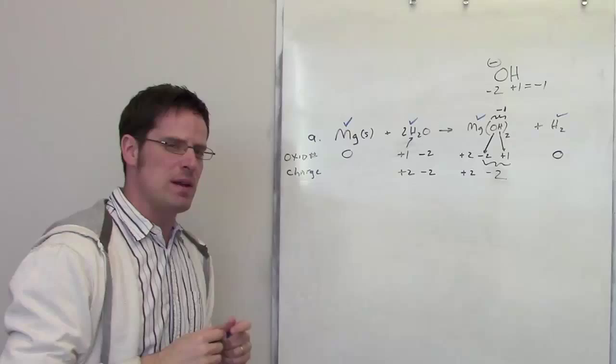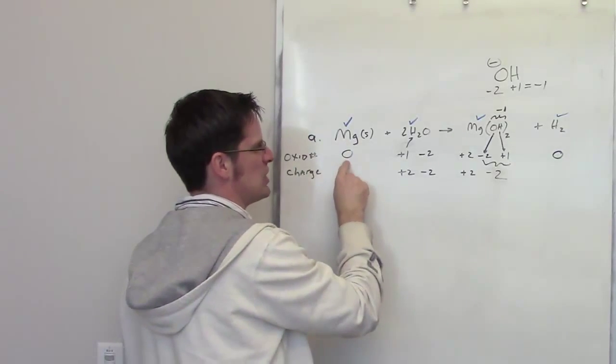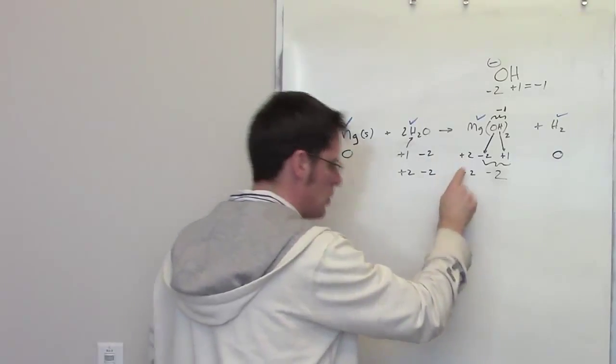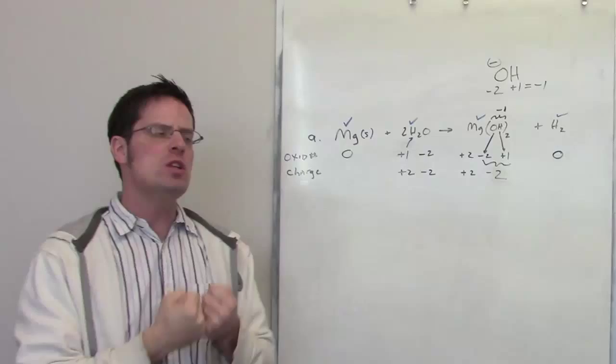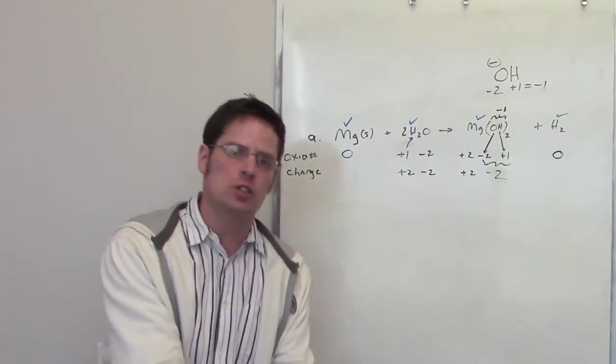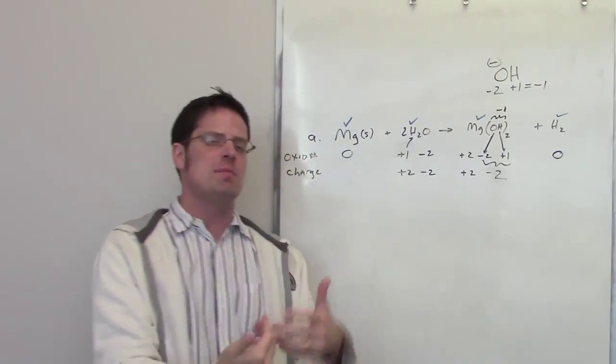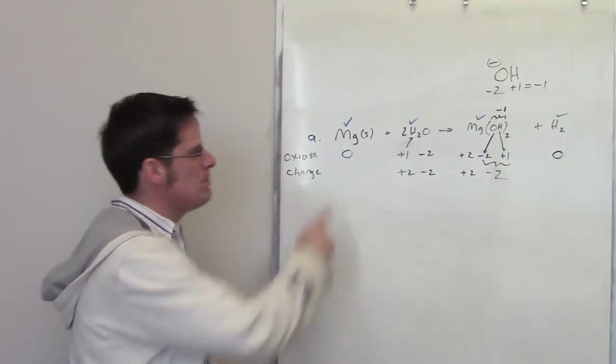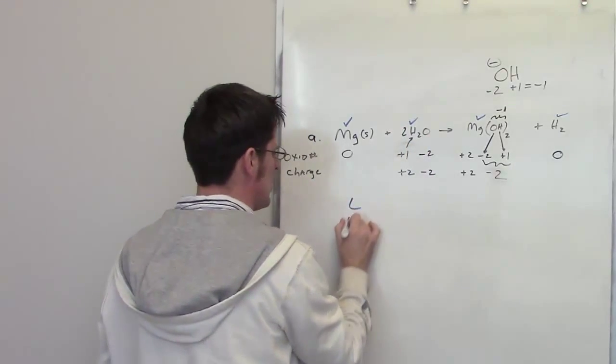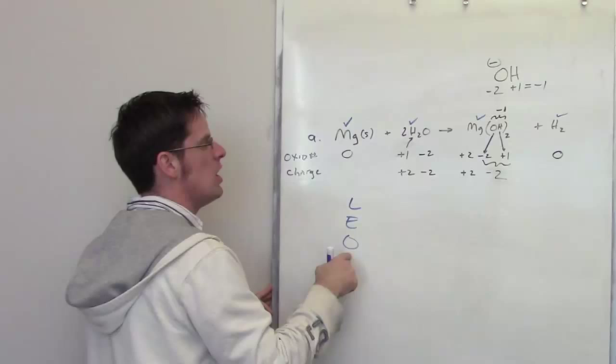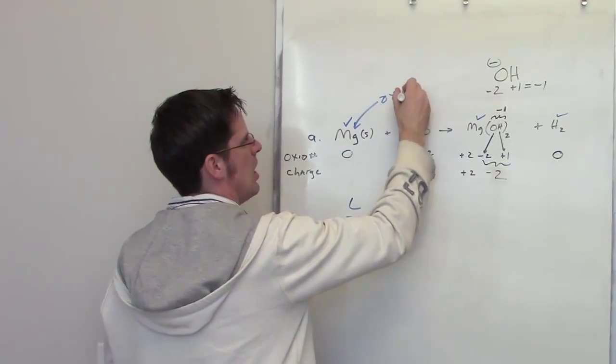So what has been oxidized? What has been reduced? Well, let's see. Magnesium goes from having a zero oxidation number to a plus two oxidation number. That means it's becoming more positive. How do you become more positive? By losing electrons. Remember, electrons have a negative charge. So if I lose electrons, I'm becoming more positive. So magnesium must have lost electrons. What is losing electrons? Losing electrons is oxidation. So magnesium has been oxidized.